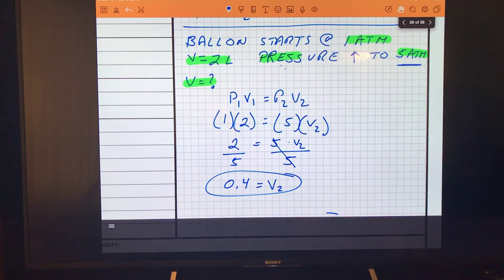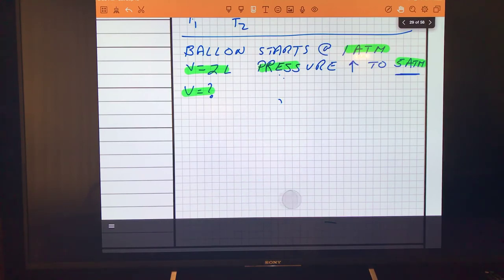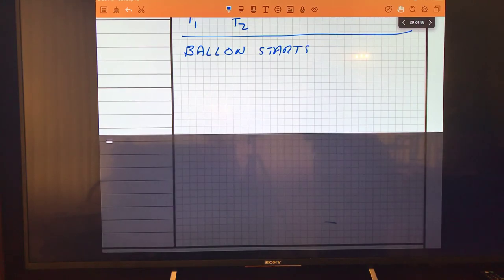Alright, the second problem we're going to do will involve temperatures and volumes. I'm going to change our problem a little bit. We're still going to use a balloon, and this time the balloon starts at a volume of 1 liter at a temperature of 10 degrees Celsius. I raise the temperature, so T2 goes up to 20 degrees Celsius.